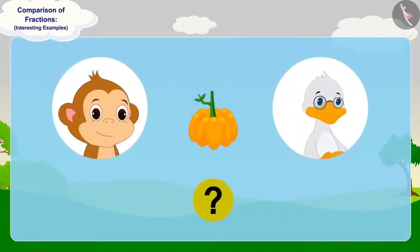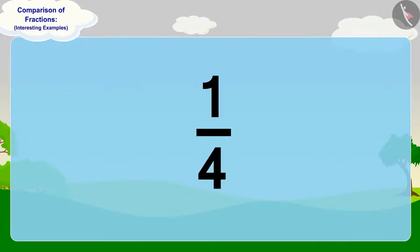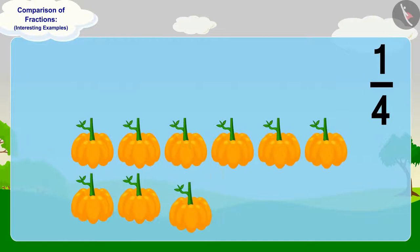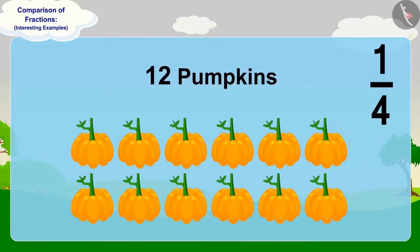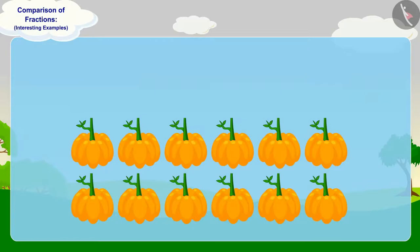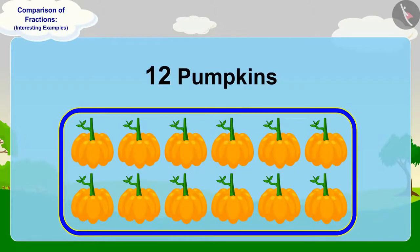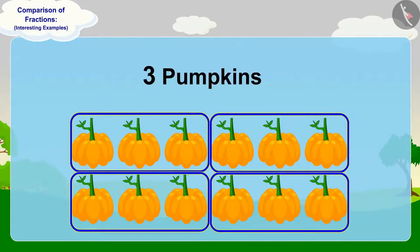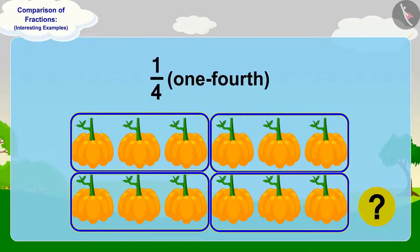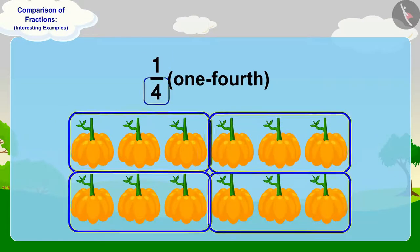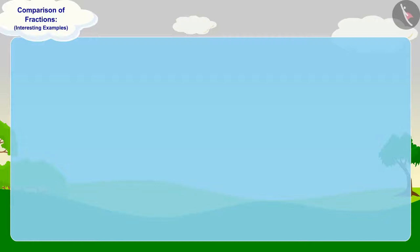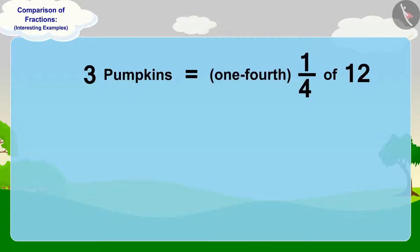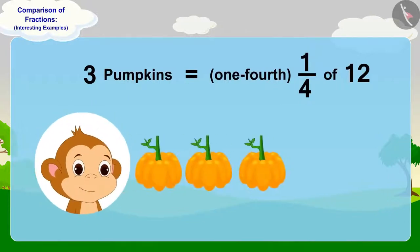Children, can you tell how many pumpkins Babban will give to uncle? In one-fourth, we have to divide our whole into four equal parts. Here, we have a total of 12 pumpkins as our whole. We will divide them into four equal parts. If we make four equal parts of 12 pumpkins, there will be three pumpkins in each part. To get one-fourth, we take one part out of these four equal parts. So three pumpkins are one-fourth of 12 pumpkins. Babban will give three pumpkins to uncle.